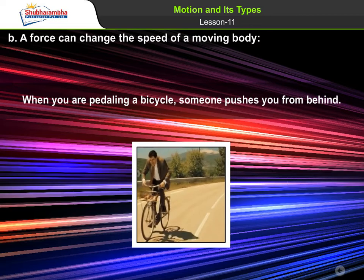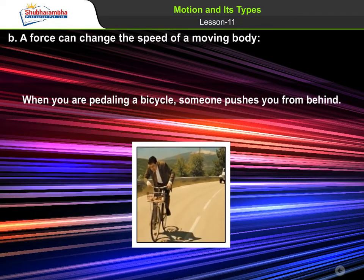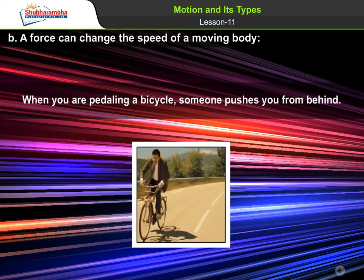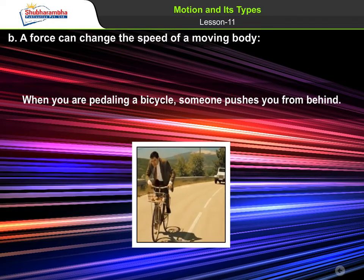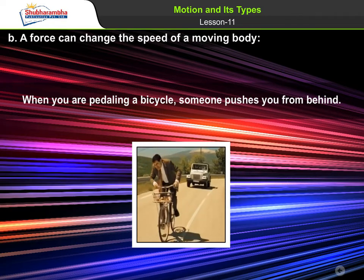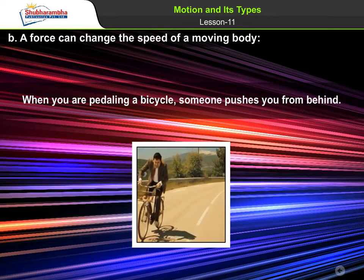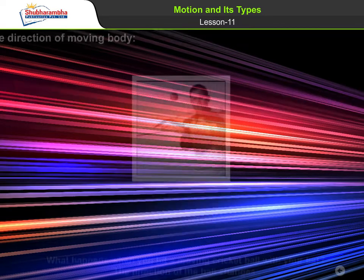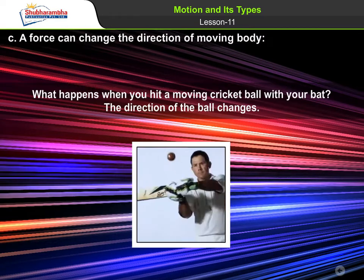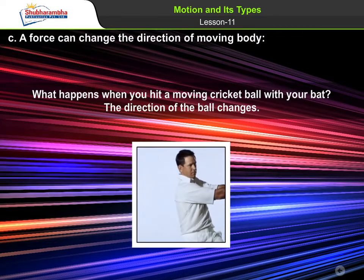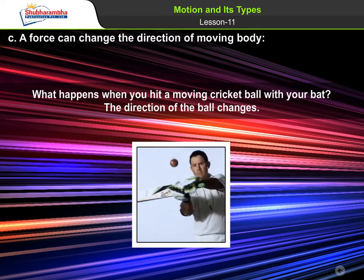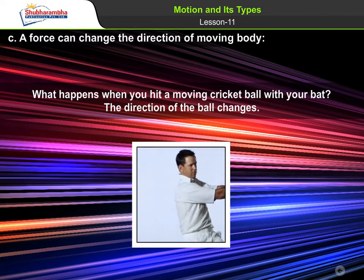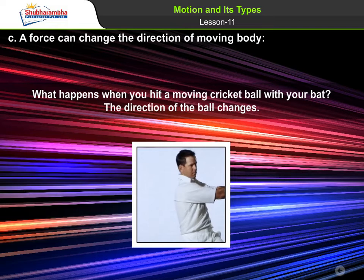A force can change the speed of a moving body. For example, when you are pedaling a bicycle and someone pushes you from behind. A force can also change the direction of a moving body. What happens when you hit a moving cricket ball with your bat? The direction of the ball changes.